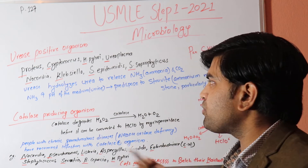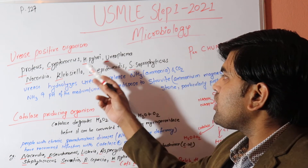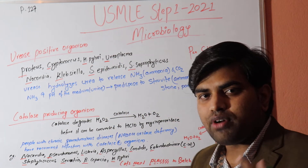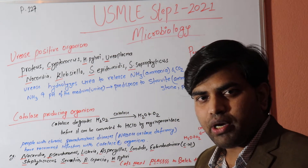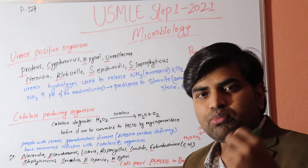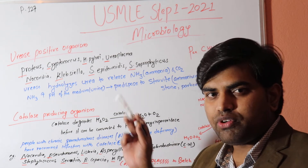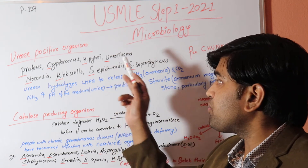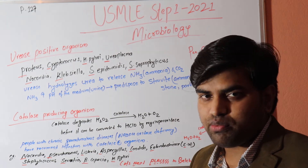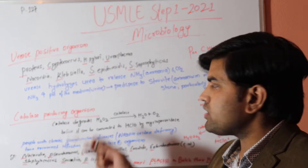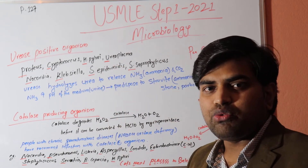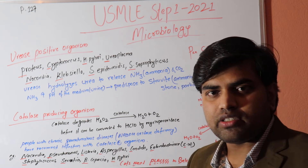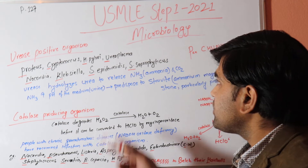Cryptococcus is important in HIV patients, causing Cryptococcal meningitis. H. pylori is notable for the rapid urease hydrolysis test: when a biopsy is placed in the rapid urease test medium, H. pylori breaks down urea so rapidly that within minutes the pH changes and the color of the medium converts.